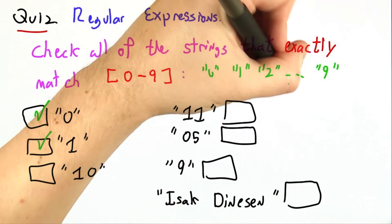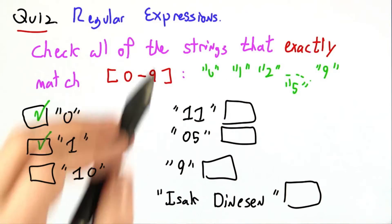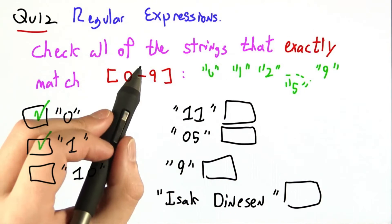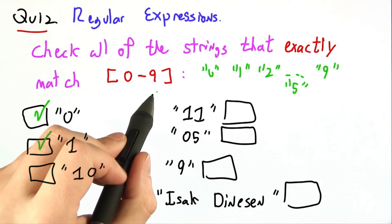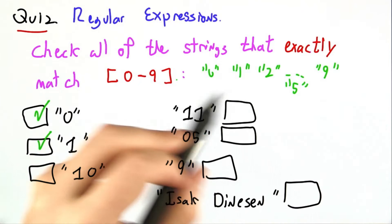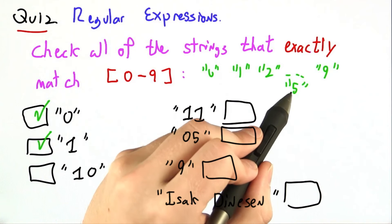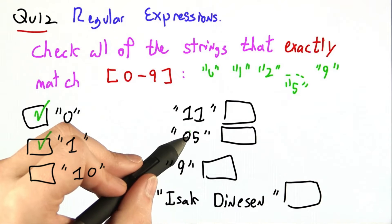0, 5 is very tempting, but regular expressions are string equations, not mathematical equations. So while 5 and 0, 5 might have the same mathematical meaning, our regular expression, which is concerned with strings, matches this one-letter string, 5, but not this two-letter string, 0, 5.